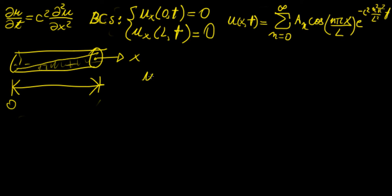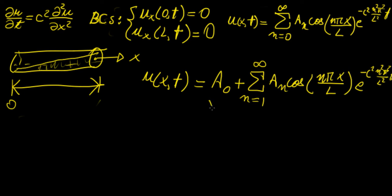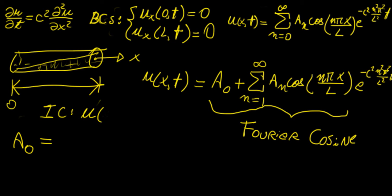We can also write this by taking out the first term as a₀ plus the sum from n equals 1 of a_n cosine(nπx over l) times e to the minus c²n²π² over l² times t. If you notice, this is the same form as a Fourier cosine series. So now we have a Fourier cosine series, which means a₀ is going to be the average value of the function between those two points, and this is related to the initial condition — so f(x, 0).